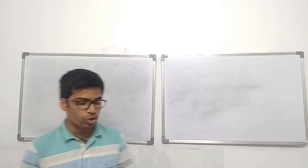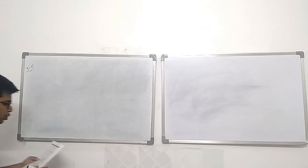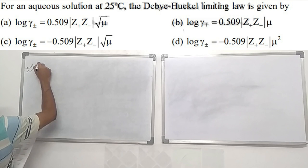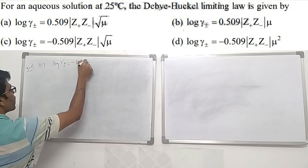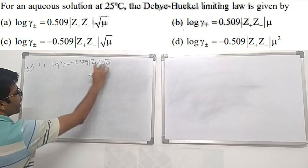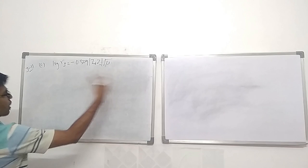From GATE June 2011, a straightforward question: they asked for the equation of the Debye-Hückel limiting law, which is log γ± = −0.509 |z₊z₋| √μ, where μ is the ionic strength. Don't confuse μ here with chemical potential — it is option C.